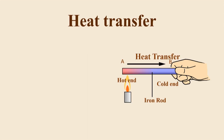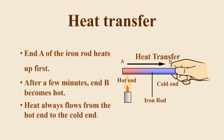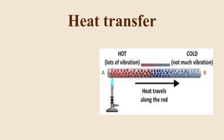Now, let us have a look at what happens when an iron rod is heated. End A absorbs heat energy and becomes hot. After some time, end B also becomes hot. Therefore, we can deduce that heat flows from the hot end to the cold end. The diagram helps to explain what actually happens inside the rod.